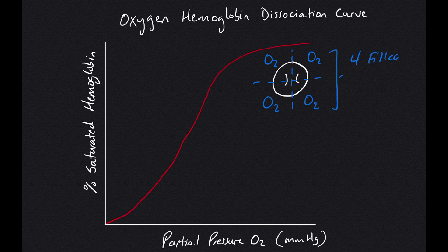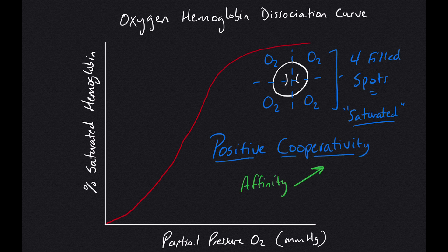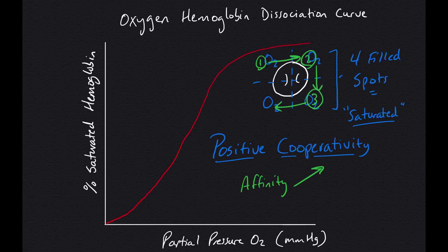Due to a phenomenon called positive cooperativity, hemoglobin's desire or affinity for oxygen increases as it fills up its available slots for oxygen to connect to, of which there's four. Simply put, it wants more as it gets more.